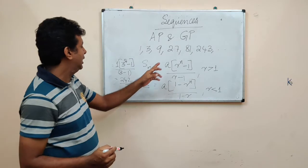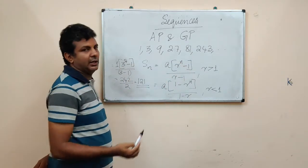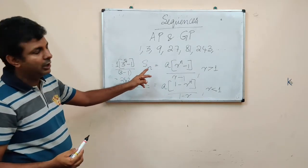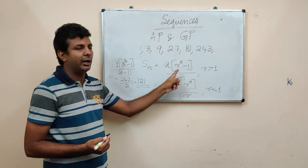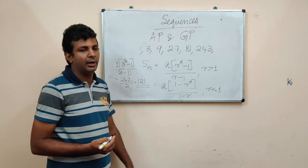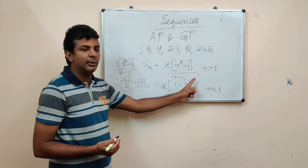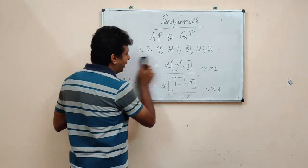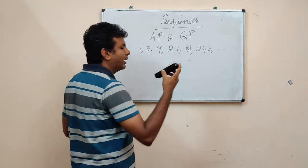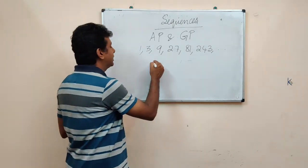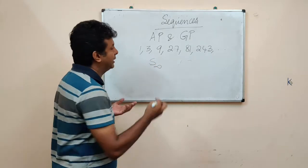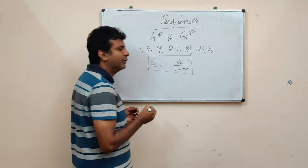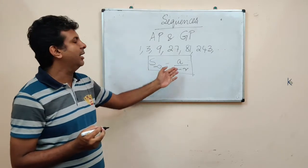Let us validate that. Sum to 5 terms: 81 plus 27 is 108, plus 9 is 117, plus 3 is 120, plus 1 is 121. So sum to N terms of a GP is A times (R raised to N minus 1) divided by (R minus 1) for R greater than 1, and A times (1 minus R to the power N) divided by (1 minus R) when R is less than 1. When R is less than 1, this can go on to infinity, and the sum to infinity of a GP with R less than 1 is A divided by (1 minus R).